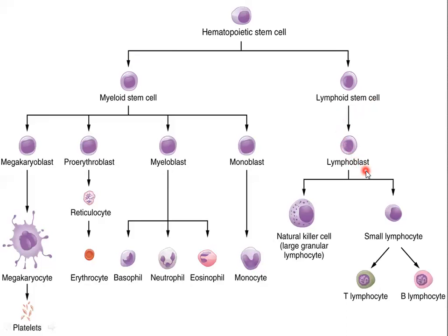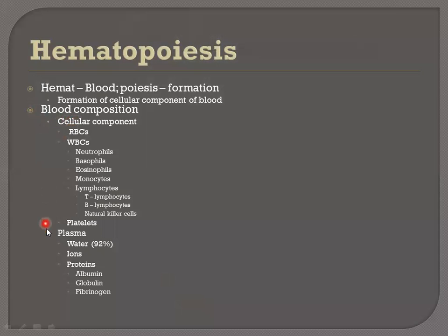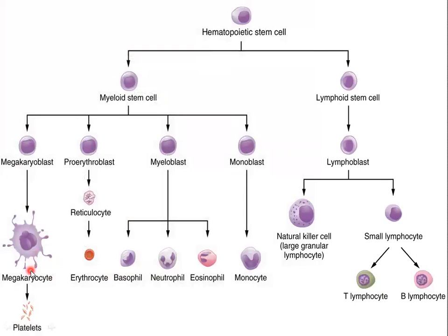Looking at this picture in more detail: in our blood we have two components — the cellular component and the plasma. In the cellular component we have platelets, erythrocytes, basophils, neutrophils, eosinophils, monocytes, natural killer cells, T lymphocytes, and B lymphocytes.